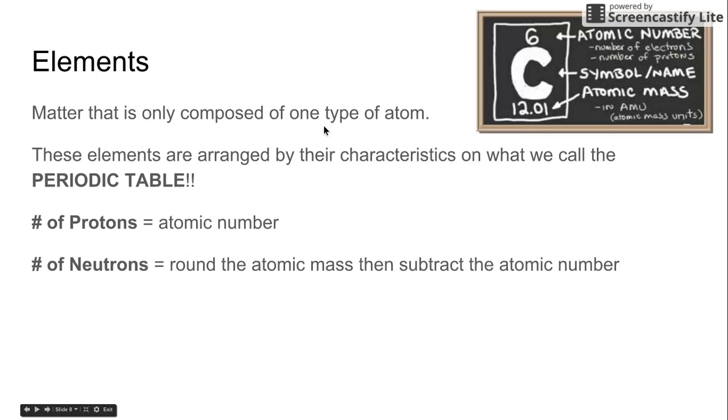So the number of protons is the atomic number, or that jersey number. The number of neutrons is equal to, if you take this atomic mass and you round it, so in this case it would become 12, and then you subtract the atomic number, which in this case was six. So now you have 12 minus 6, which equals 6. And that tells you the number of neutrons.